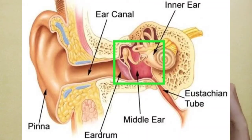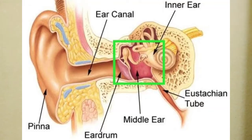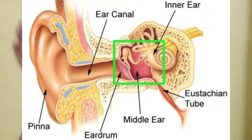In a normal ear, when we look from outside we see the pinna, and the pinna continues with an ear canal. At the end of the ear canal we have the eardrum. Behind the eardrum we have the middle ear. Imagine the middle ear like a balloon filled with air. The air pressure of the middle ear should be very similar to the atmospheric air pressure. If the air pressure in the middle ear is more or less than the atmospheric pressure, we get a blocked sensation.